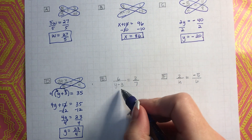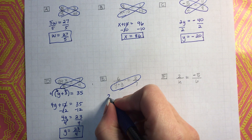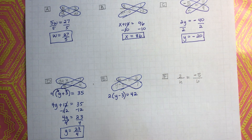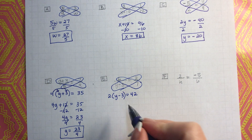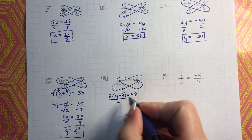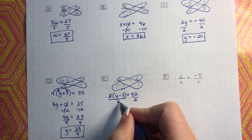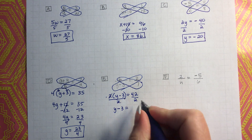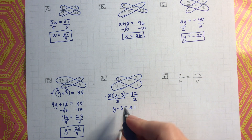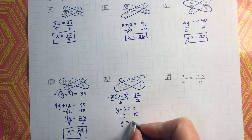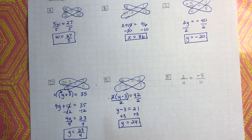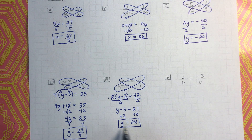We're back. Let's use that cross-products property. 2 times the quantity y minus 3 — remember that's 2 multiplied by the quantity — equals 6 times 7, which is 42. For this one I'm going to divide everything by 2, since 42 is divisible by 2. 2 divided by 2 is just 1, so I have y minus 3 equals 42 divided by 2, which is 21. Then I add 3 to both sides, and I get y equals 24. You can see that's fewer steps than doing the distributive property, but you arrive at the same answer.